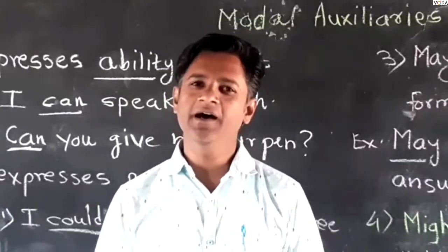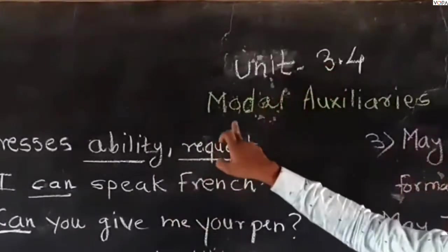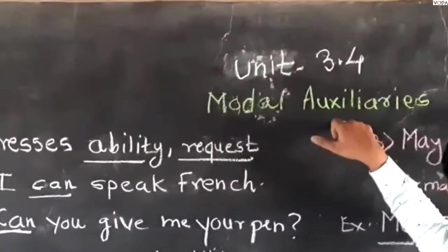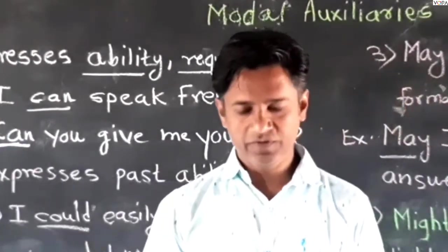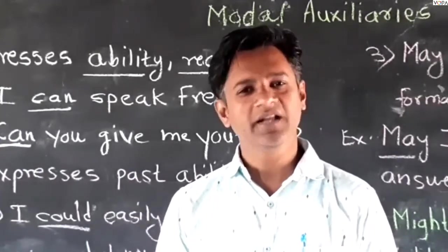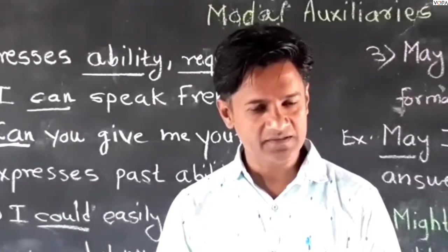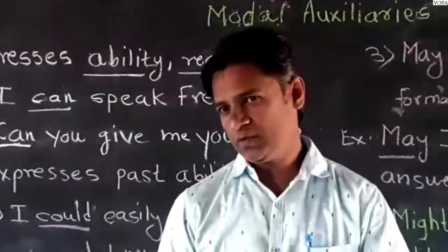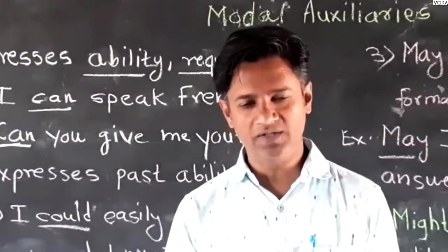Today we are going to learn unit number 3.4, and that is modal auxiliary verbs. Let's understand the three words: modal auxiliary verbs. Verbs means action words (kriyapa). Auxiliary verbs we can say helping verbs. There are two types of auxiliary verbs: primary auxiliary verbs and modal auxiliary verbs.